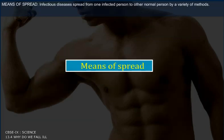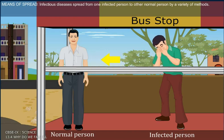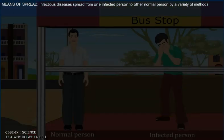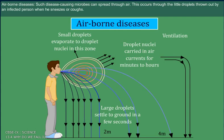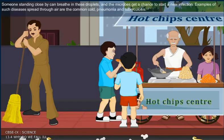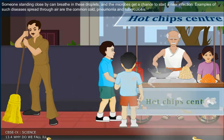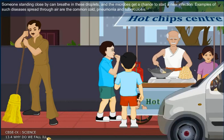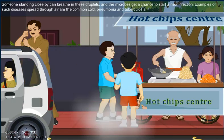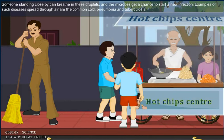Means of spread: Infectious diseases spread from one infected person to another by a variety of methods. Airborne diseases: Such disease-causing microbes can spread through the air. This occurs through the little droplets thrown out by an infected person who sneezes or coughs. Someone standing close by can breathe in these droplets and the microbes get a chance to start a new infection. Examples of such airborne diseases are the common cold, pneumonia, and tuberculosis.